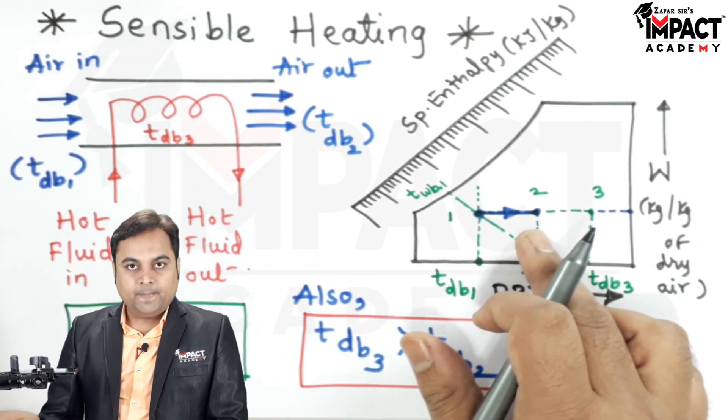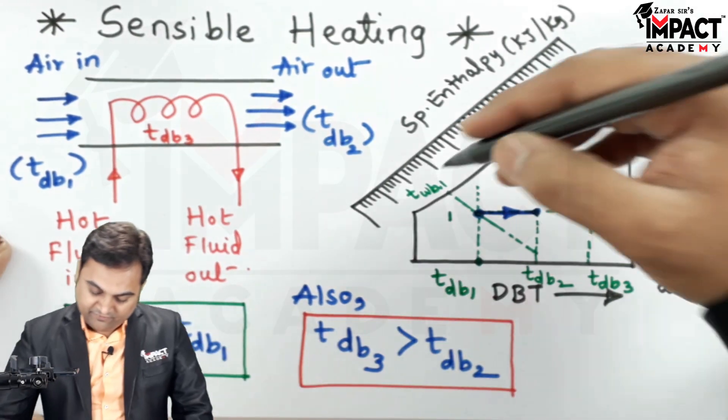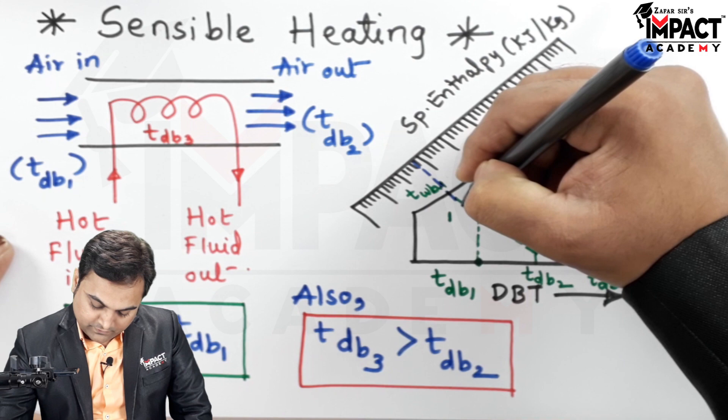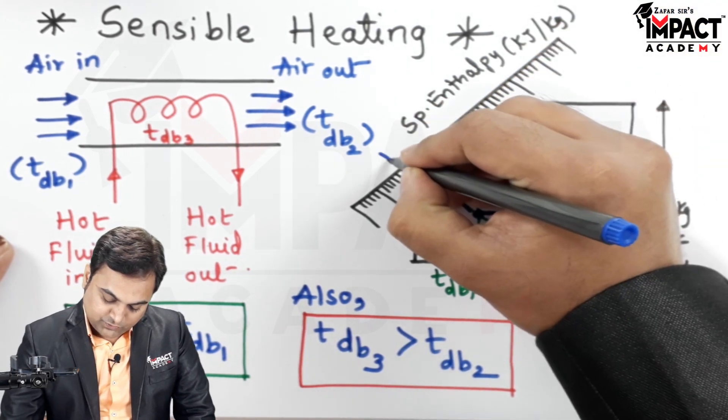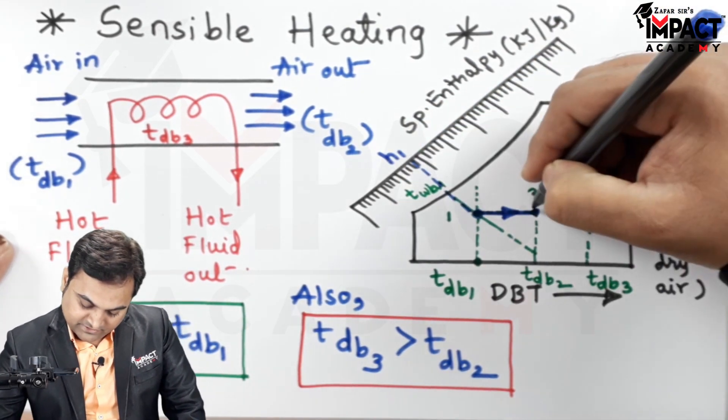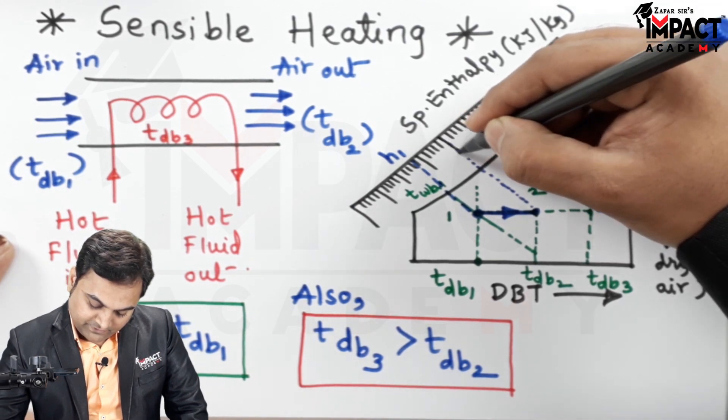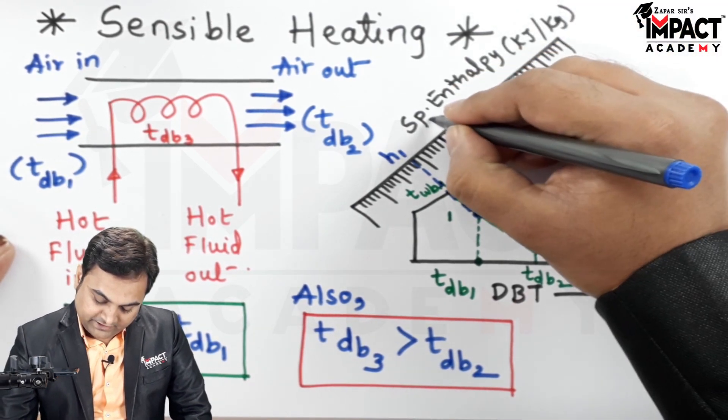Now if we plot this point number one on the specific enthalpy line, we are going to get h1 as the enthalpy, and similarly parallel to it, on the specific enthalpy line we are going to get h2.